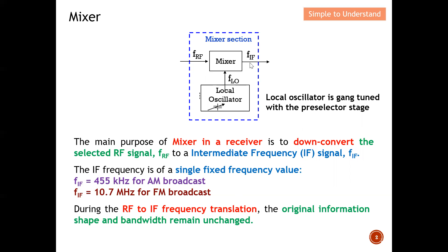The IF frequency is a single fixed frequency value — FIF does not vary. FRF and FLO vary, but FIF is actually fixed. For example, for AM broadcast FIF equals 455 kHz, and for FM broadcast FIF equals 10.7 MHz. This frequency remains fixed regardless of what station you want to receive.